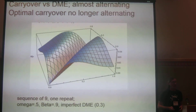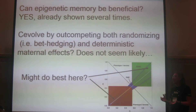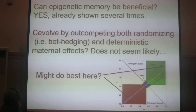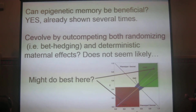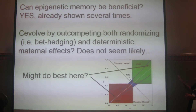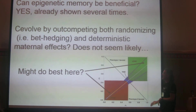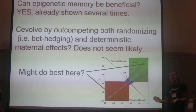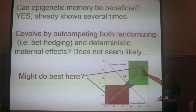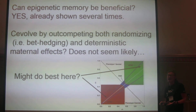What we're trying to do now is come up with some techniques to analyze approximations about this. What we really want to know is not whether epigenetic memory can be beneficial — that's already been shown — but can epigenetic memory outcompete these other two strategies? I'm not convinced it can, because there's not a lot of space for it to succeed. If there's no information, randomizing effects are always going to be better. If there's lots of information, deterministic maternal effects are going to be better. So maybe somewhere in the middle there's a range where these epigenetic carryover effects can outcompete both of these other two strategies.